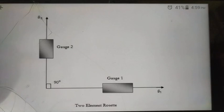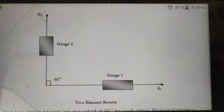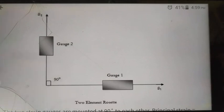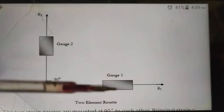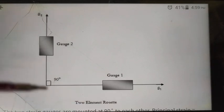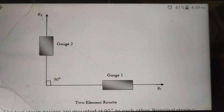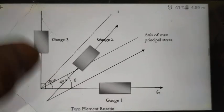First, we will briefly review the types of rosettes. The first type is the two-element rectangular rosette, consisting of two strain gauges — gauge one and gauge two — mounted such that they make a 90-degree inclination with each other. This type of strain gauge is used mainly when you know the actual location where the strain appears.